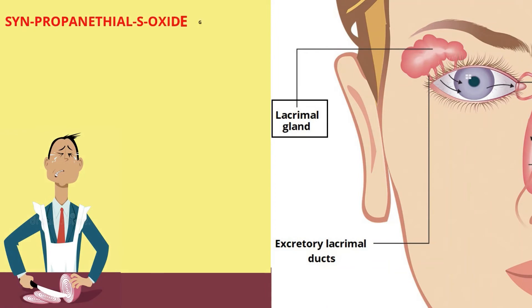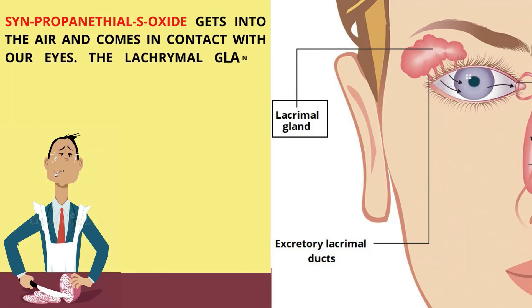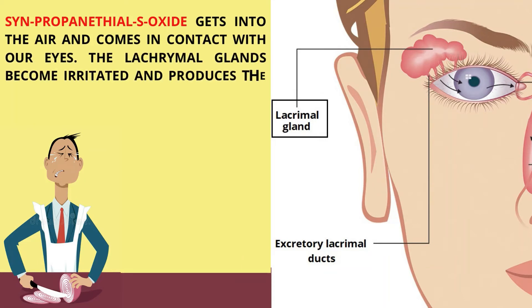Syn-propanethial-S-oxide gets into the air and comes in contact with our eyes. The lacrimal glands become irritated and produce tears.